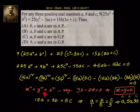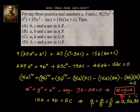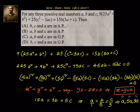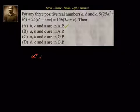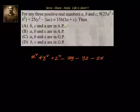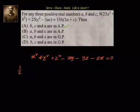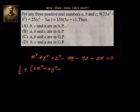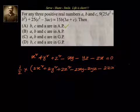Now let's understand why x² + y² + z² − xy − yz − zx = 0 implies x = y = z. This is in the NCERT ninth class textbook, Chapter 2. We multiply the expression by 2 and divide by 2, giving: 2x² + 2y² + 2z² − 2xy − 2yz − 2zx = 0.